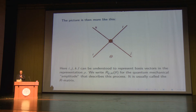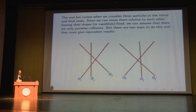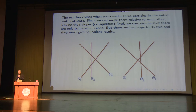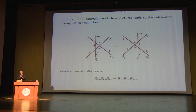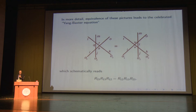The real fun comes when we consider three particles in the initial and final state. Since we can move them relative to each other while leaving their slopes or rapidities fixed, we can assume there are only pairwise collisions, but there are two ways to do this. There are two generic ways for three-to-three scattering to be described as a sequence of three pairwise collisions — the pictures on the left and on the right. In a theory with symmetries that can move particles by velocity-dependent amounts, these pictures must be equivalent. The equivalence of these pictures leads to the celebrated Yang-Baxter equation, which if you write it out with all its indices and all the R-matrices is a horrible-looking mess. You sum over the intermediate states on both left and right and have to get the same result. That's a nonlinear relation on the R-matrix.